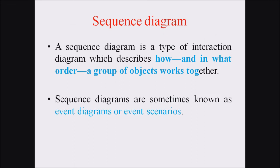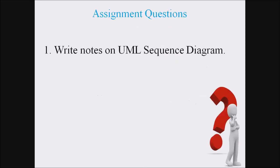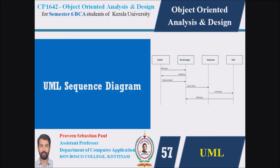So, a sequence diagram is a type of interaction diagram which describes how and in what order a group of objects work together. Sequence diagrams are sometimes known as event diagrams or event scenarios. This was an introduction to the sequence diagram. The assignment question is: write notes on UML sequence diagram. In the upcoming lecture we will discuss an example relating to the sequence diagram. Thank you and all the best.